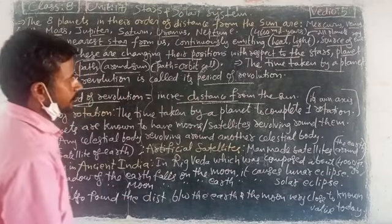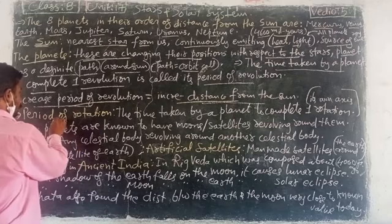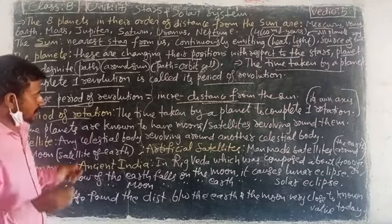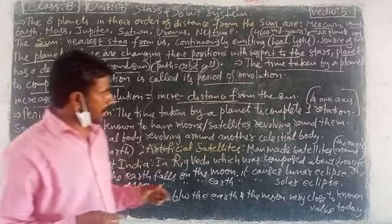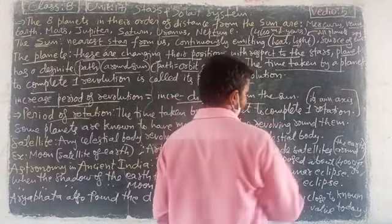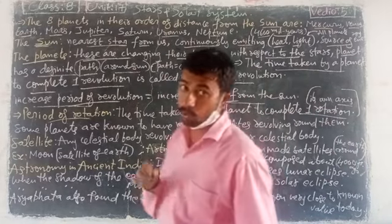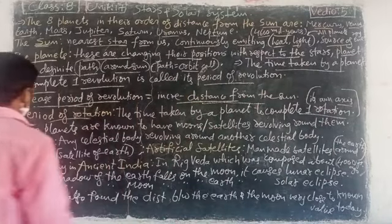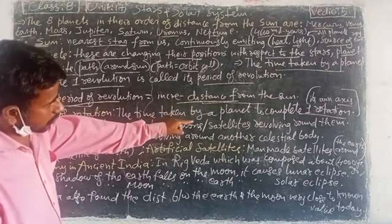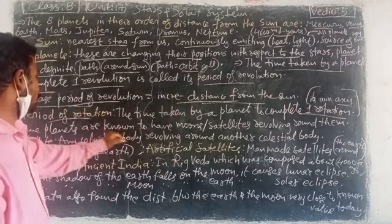The period of rotation is the time taken by a planet to complete one rotation around its own axis.